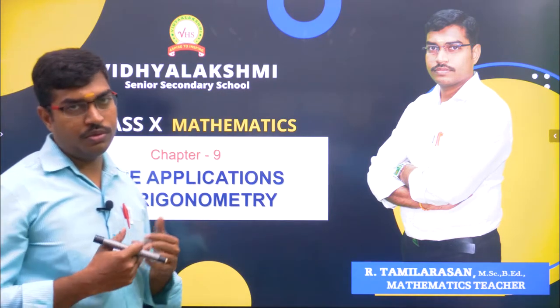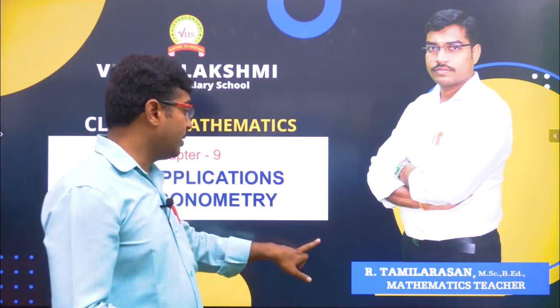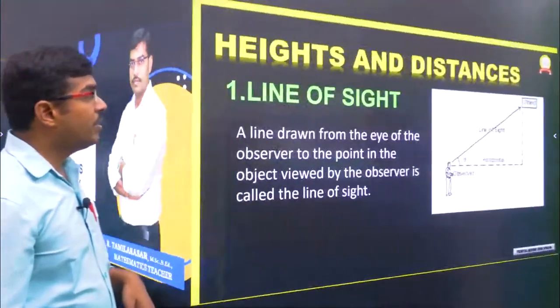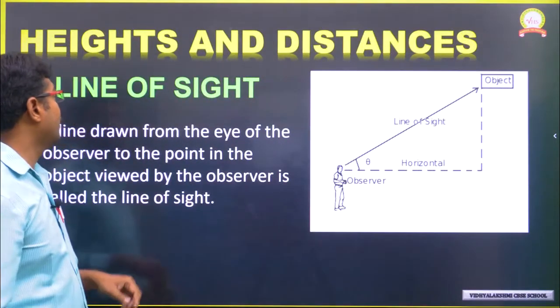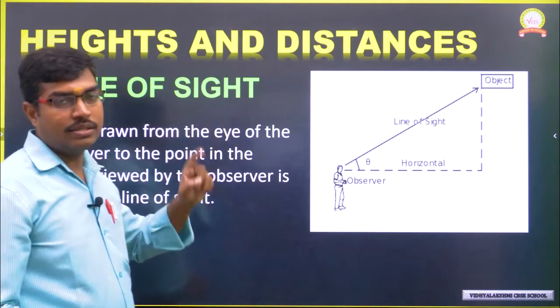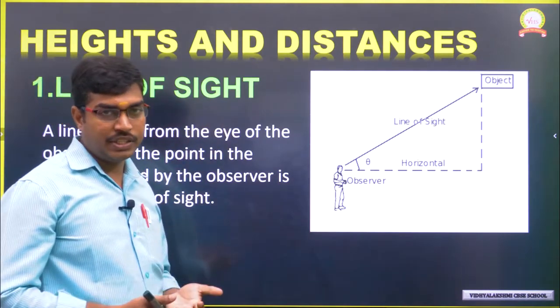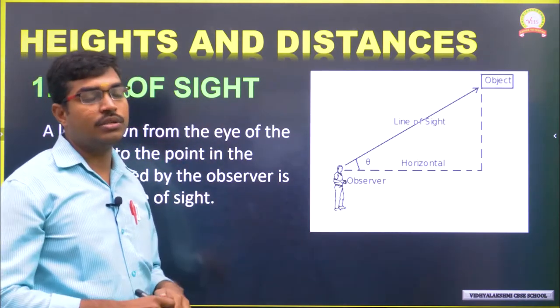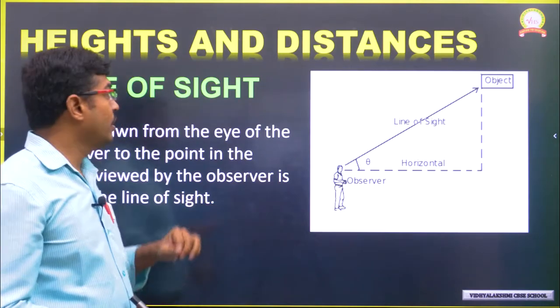Before moving to the chapter, we have to learn one important concept. The first one is line of sight, the second one is angle of elevation, and the third one is angle of depression.